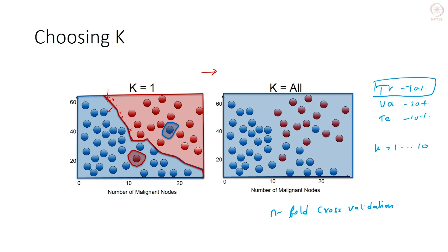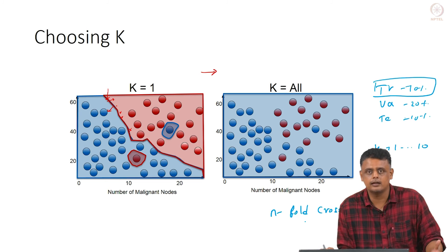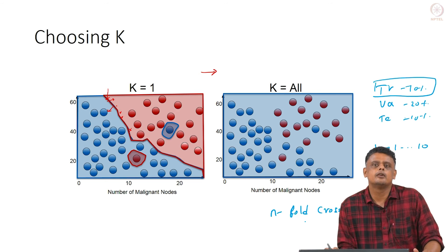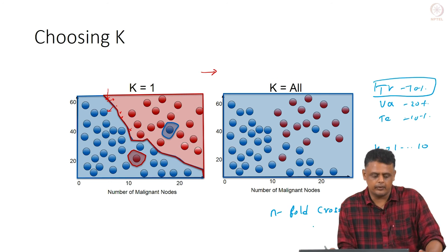This is a very simple method in the sense that you do not actually do any training — you just load all the data into memory, which can be a problem when data size becomes very large. You split it into training, testing, and validation, and then you find out the nearest neighbour.